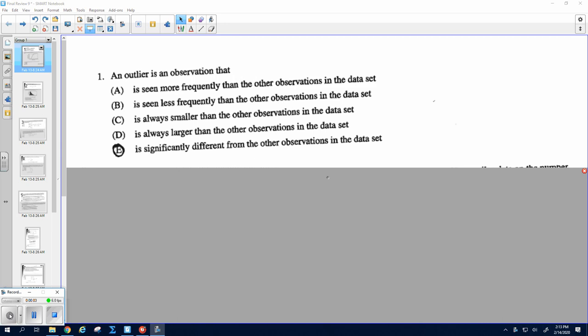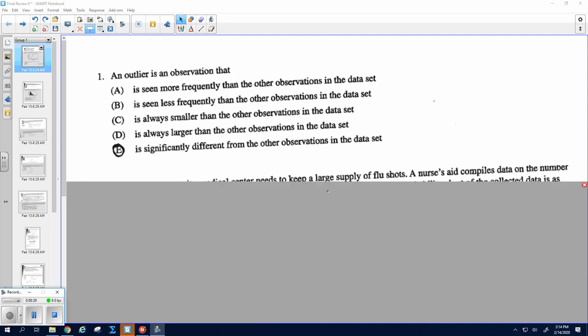Alright you guys. Number one is E, so it's significantly different. Basically, it's not going to be more or less frequent or always smaller or always larger. It's just really different from all the rest of the observations. And remember, our new definition of outlier is actually that it's got a really large residual. We would call an influential point something that influences anything on the line, the slope, the R value, or anything.